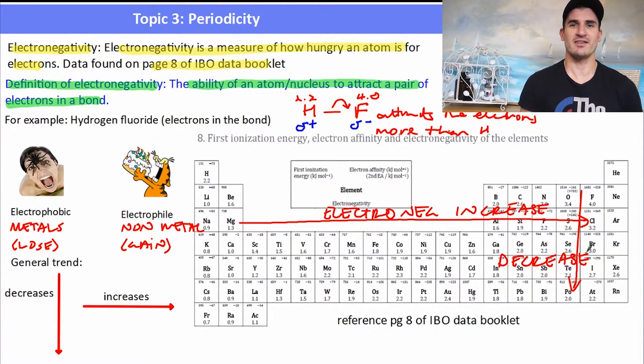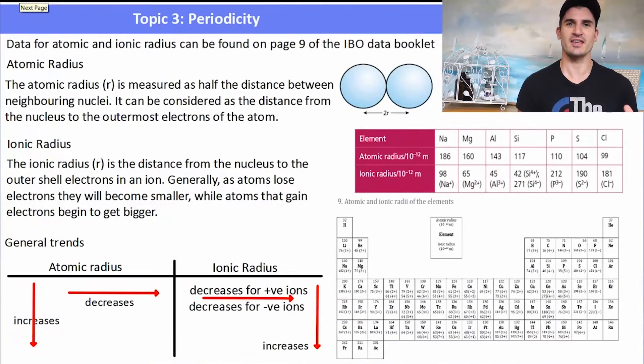Fluorine is the most electronegative element. It wants to gain electrons more strongly than any other. And francium is one of the least electronegative elements.